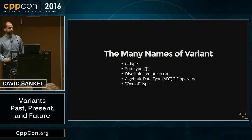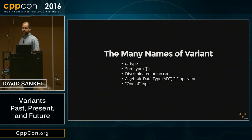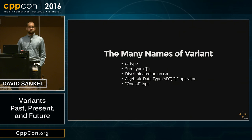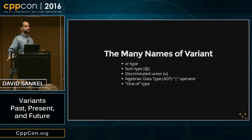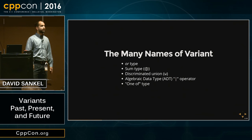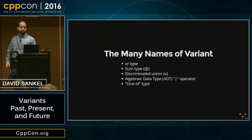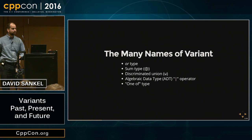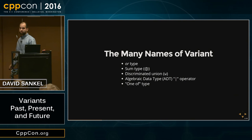Here are the different names for variant, because you'll hear it under other names in different conversations. Some people call it the or-type. Some call it the sum type — if you hear conversations about sum types, we're talking about variants. Discriminated union is a mathematical term for it. They also call it the algebraic data type pipe operator, or a one-of type. These are just different names for the same thing.